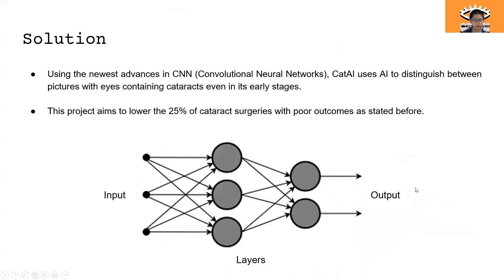So the solution. Using the newest advances in CNN, or convolutional neural networks, CAT AI uses AI to distinguish between pictures with eyes containing cataracts, even in its early stages. So we can just put a picture of your eye and then the program will try to say if you have cataracts or not. This project aims to lower the 25% of cataract surgeries with poor outcomes stated before.